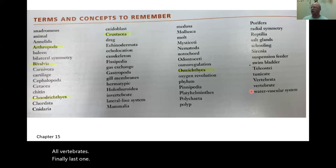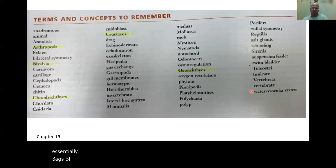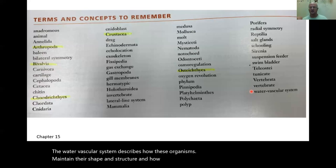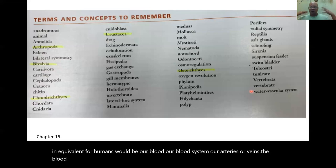Water vascular system — many animals don't have exoskeletons or vertebrae; they're essentially bags of fluid. The water vascular system describes how these organisms maintain their shape, structure, and function. An equivalent for humans would be our blood system — arteries, veins, blood, heart. Same concept for these organisms.